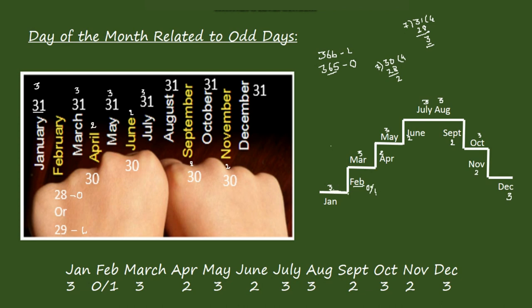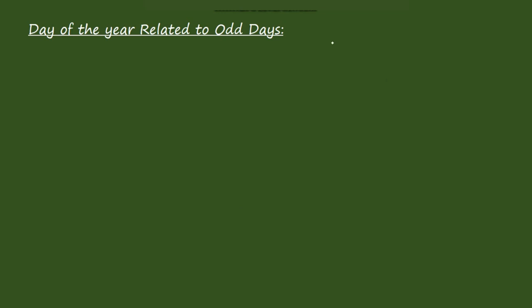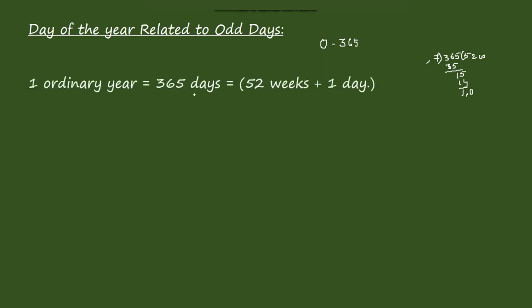Now relating the year with odd days: an ordinary year has 365 days. Dividing 365 by 7 gives 52 weeks and 1 odd day. So one ordinary year has one odd day.